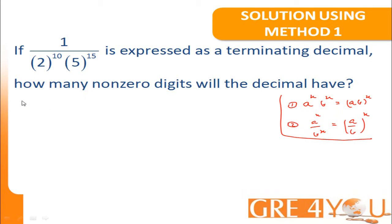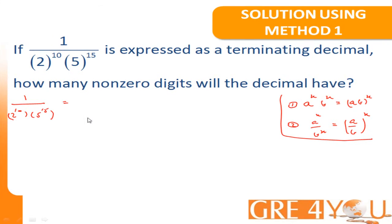Let me rewrite the problem down here below. 1 over 2 to the 10 and 5 to the 15 is what we have. I'm going to keep the 1 over 2 to the 10 as it is. And I'm going to split the 5 to the 15 into a 5 to the 5 times a 5 to the 10. I'm going to bring the 5 to the 5 out in front. So, I have 1 over 5 to the 5 times a 1 over 2 to the 10 times a 5 to the 10.